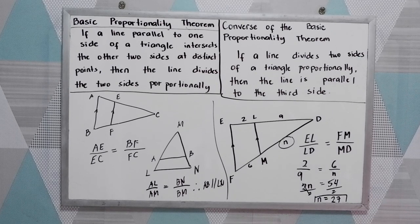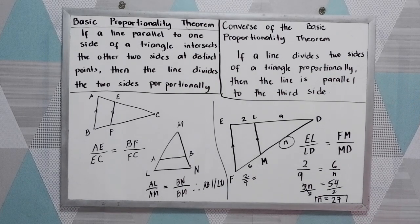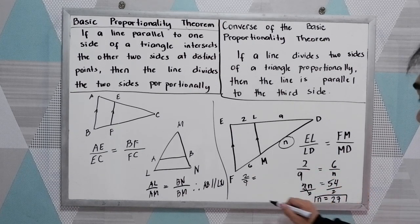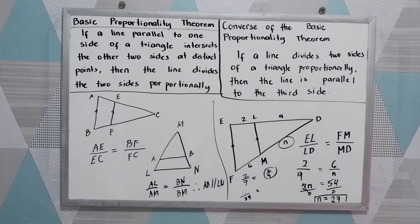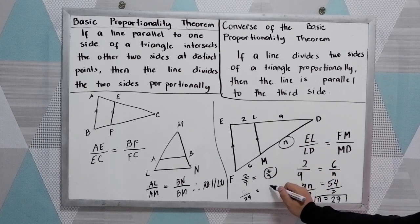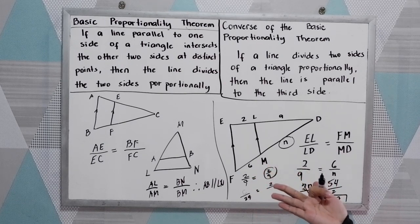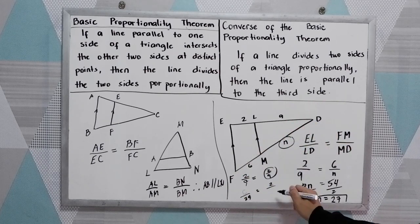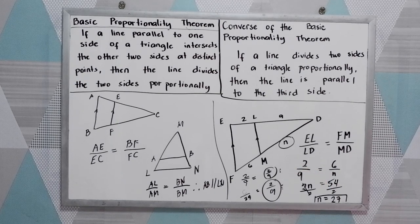If we want to check, we substitute: 2 over 9, and 6 over 27. Reducing 6 over 27 by dividing by 3 gives 2 over 9. So the ratio of similarity is 2 over 9. Therefore, the two triangles are similar.